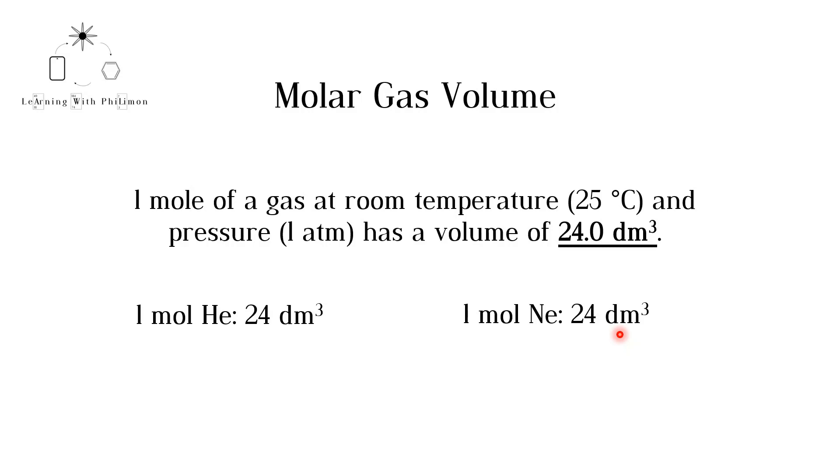We can use the following equation to calculate the moles of a gas at room temperature and pressure if the volume is known. The moles N are equal to the volume V divided by 24 decimeters cubed per mole. Rearranging the equation, we can also find the volume of a gas if the number of moles is known. V is equal to N multiplied by 24 decimeters cubed per mole.